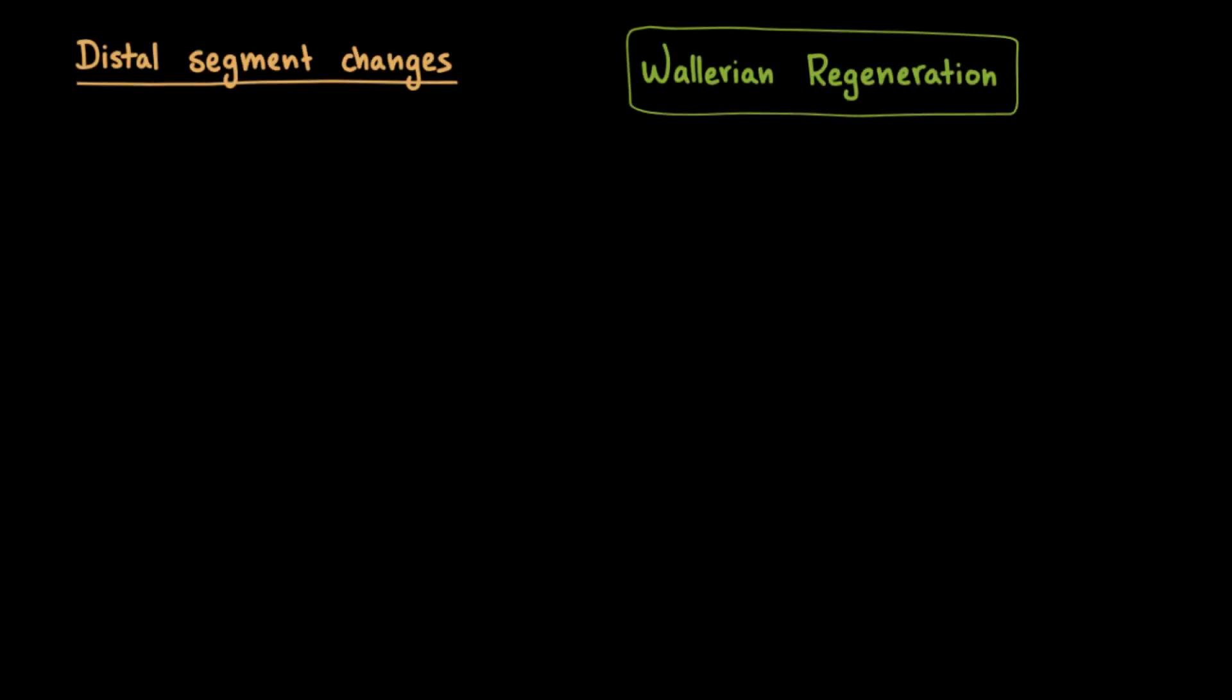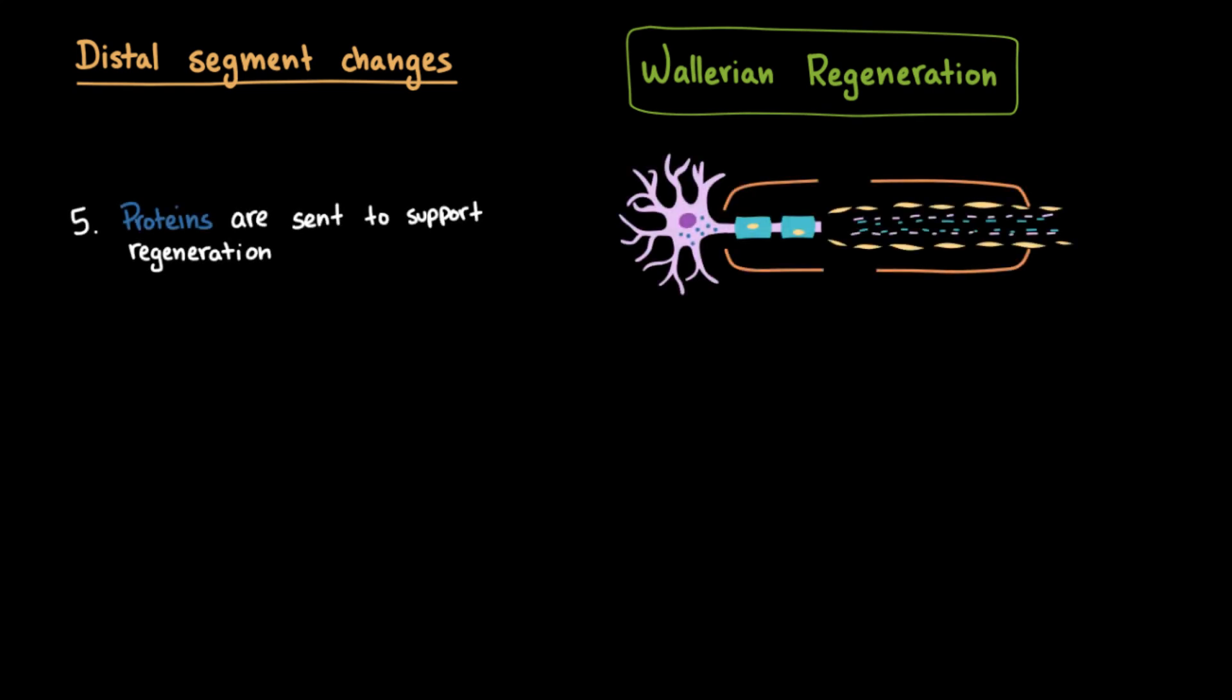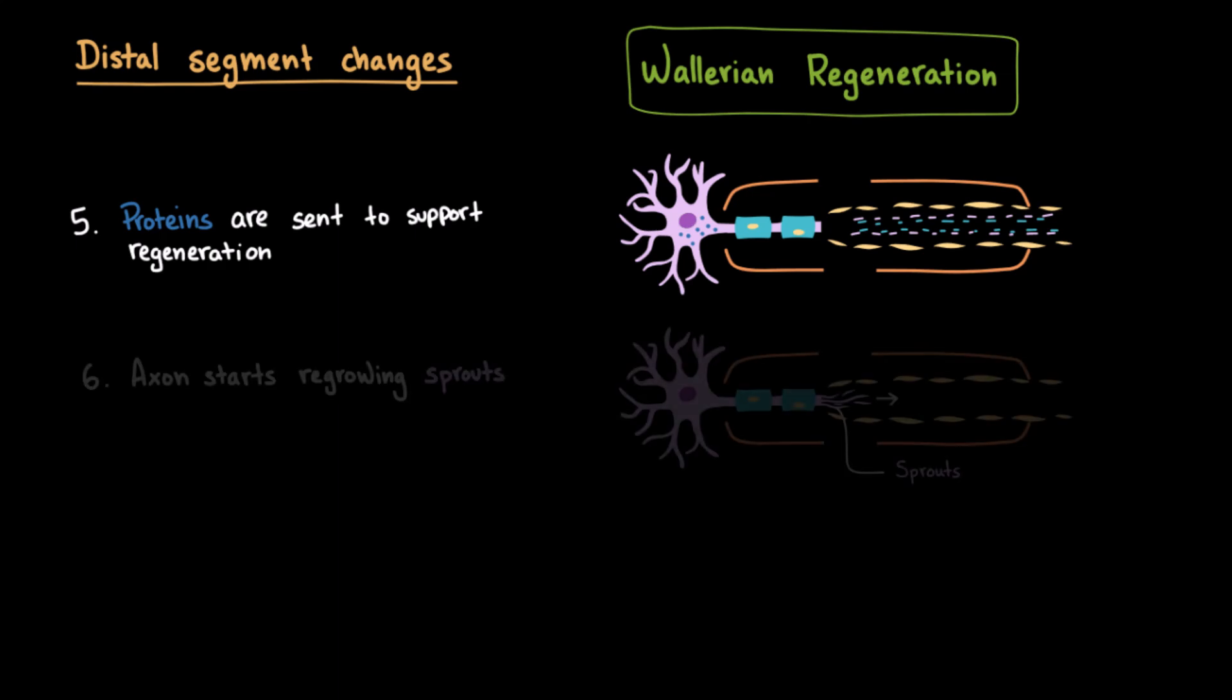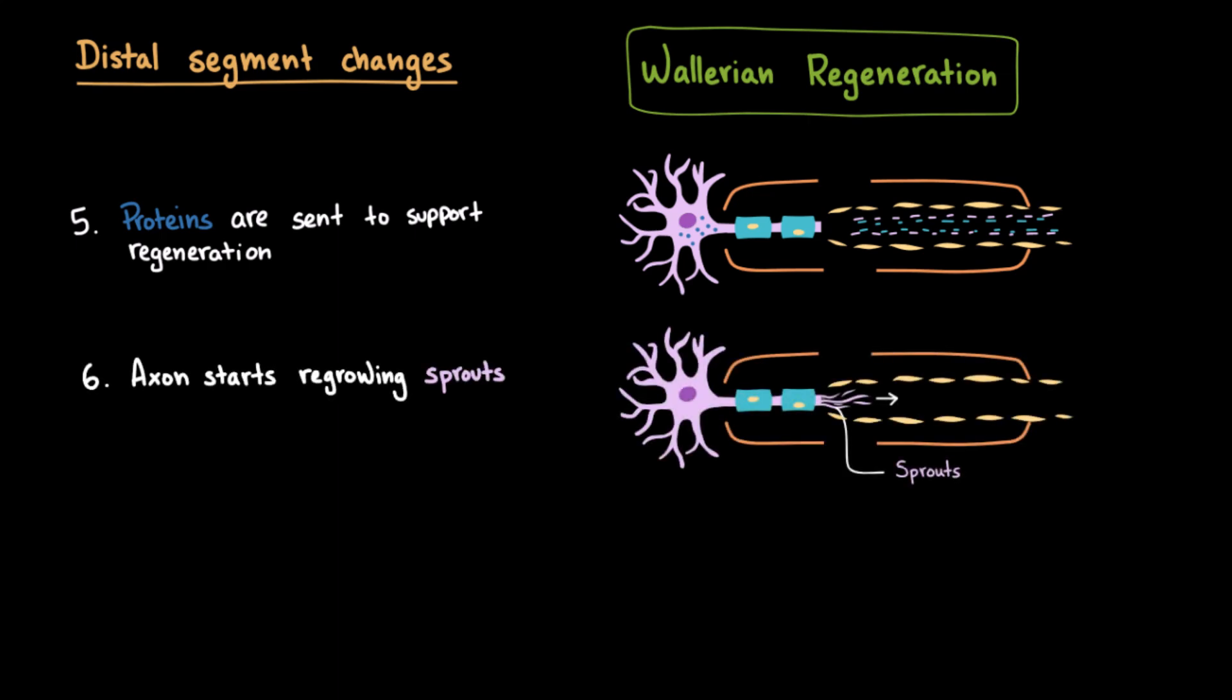So, after Wallerian degeneration, the regeneration process begins. Remember how the proximal segment switched into repair mode, with the nucleus ramping up protein production? Well, those proteins are transported down the axon to fuel regrowth. From the proximal stump, tiny axon sprouts begin to emerge. Not all of them make it, but the ones that find the Schwann cell tunnels, those bands of Böngner we talked about, get the guidance they need to keep growing in the right direction.